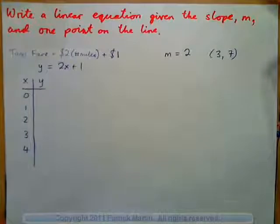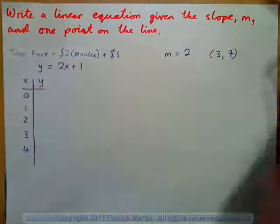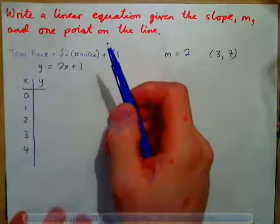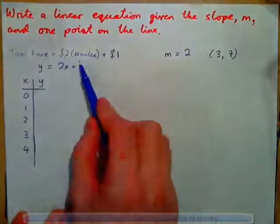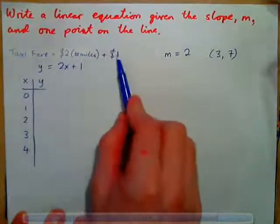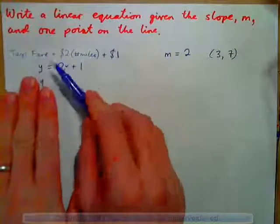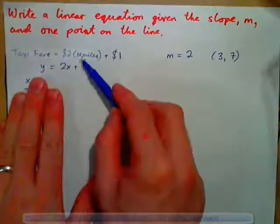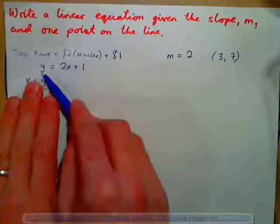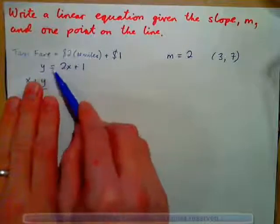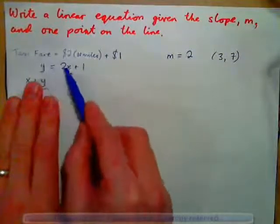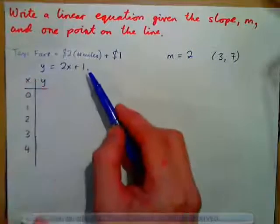Imagine you have a taxi and the fare is $2 per mile plus a $1 base fee. That's 2 times the number of miles you travel plus $1. If we let the fare be y and the number of miles be x, we have the equation y equals 2x plus 1. The fare is 2 times the number of miles plus $1.